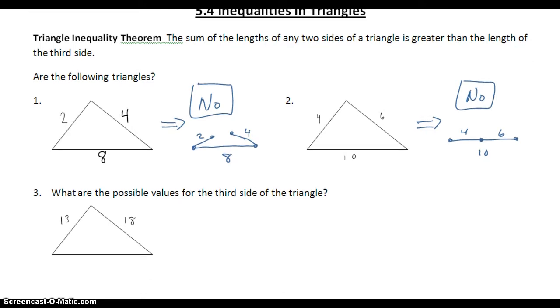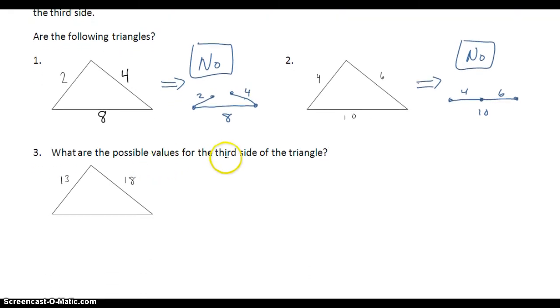Another application of this theorem is to figure out the possible values for a third side of a triangle. So if we know two sides are 13 and 18, to figure out this third side, we need to do some algebra. We know that any two sides added together have to be bigger than the third.